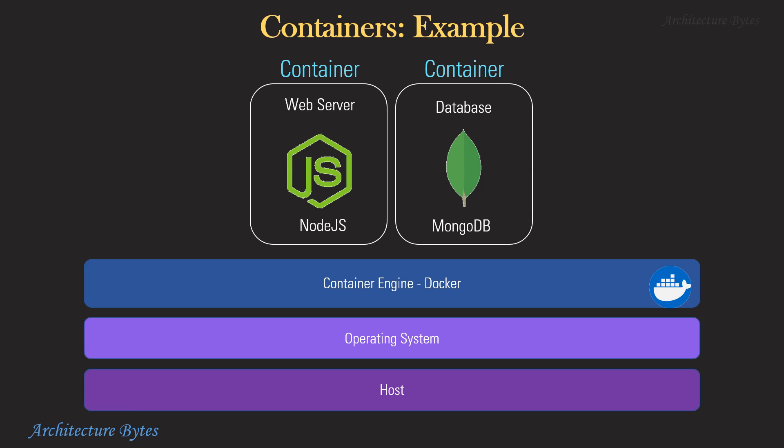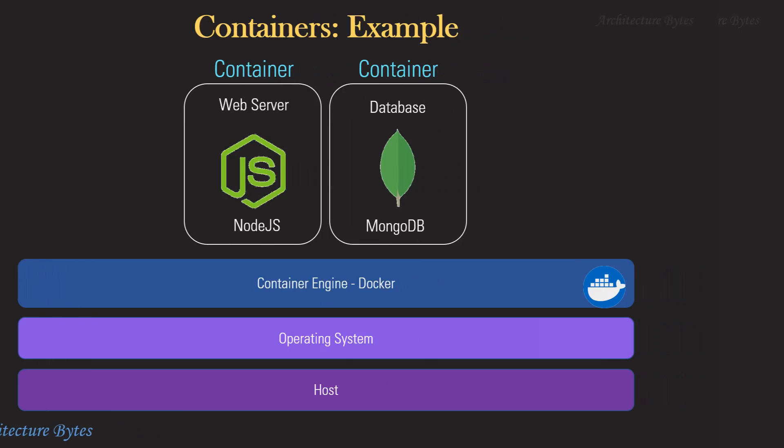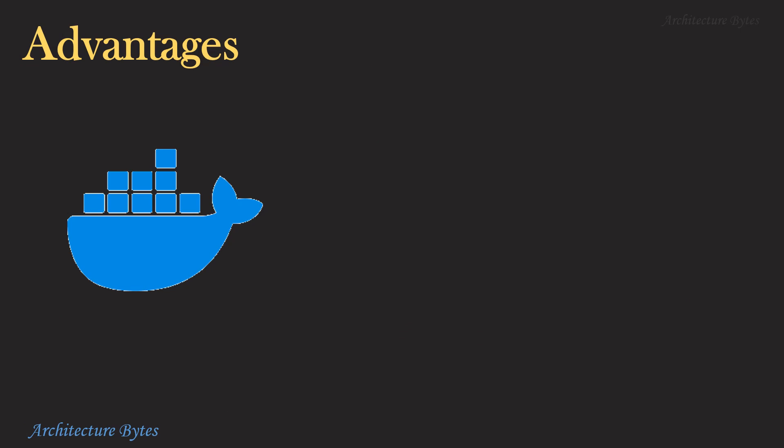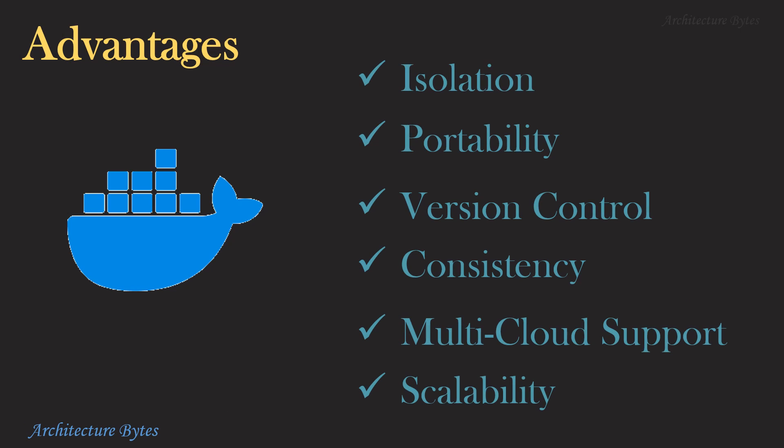Here is an example of two containers running on a host: a Node.js web server and a MongoDB database. Although they are on the same host, they are suitably isolated from one another by the container engine. So containers provide you isolation, portability, version control, consistency, multi-cloud support and scalability.